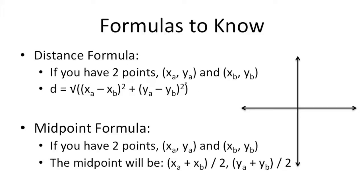If you have two points, (xa, ya) and (xb, yb), the distance between those two points is going to be the square root of (xa minus xb) squared plus (ya minus yb) squared.